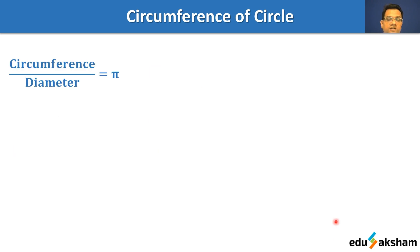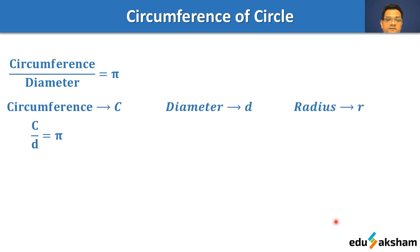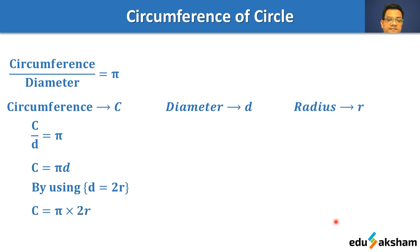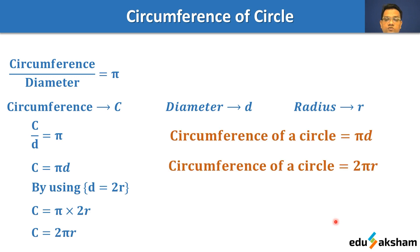Now, if we represent circumference by C, diameter by d, and radius by r, then pi equals C divided by d, or C equals pi times d — circumference equals pi d. We know that diameter d is twice the radius, so replacing d by 2r, we get C equals pi times 2r, or circumference equals 2πr. These are the two formulas to remember.